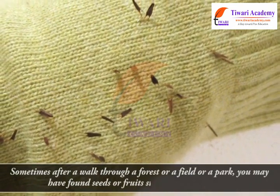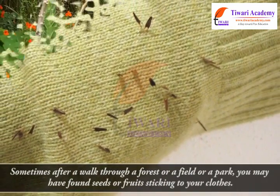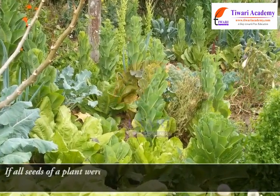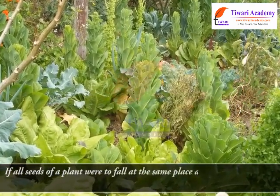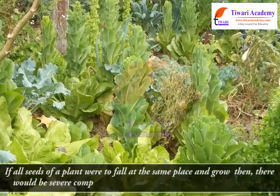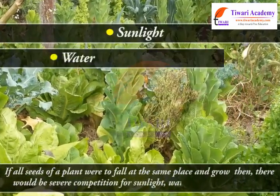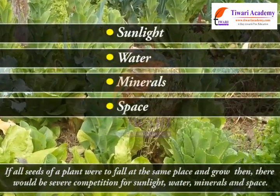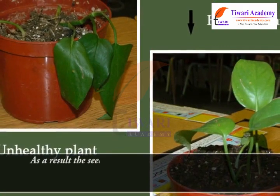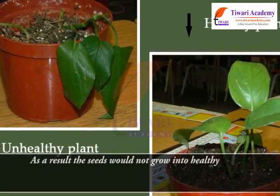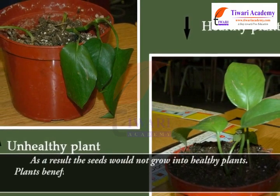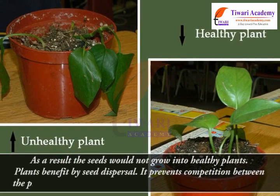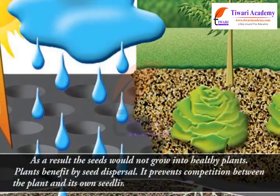If all seeds of a plant were to fall at the same place and grow, there would be severe competition for sunlight, water, minerals, and space. As a result, the seeds would not grow into healthy plants. Plants benefit greatly from seed dispersal.